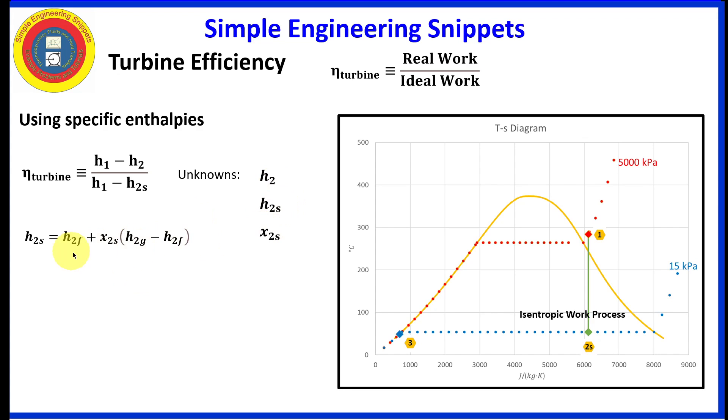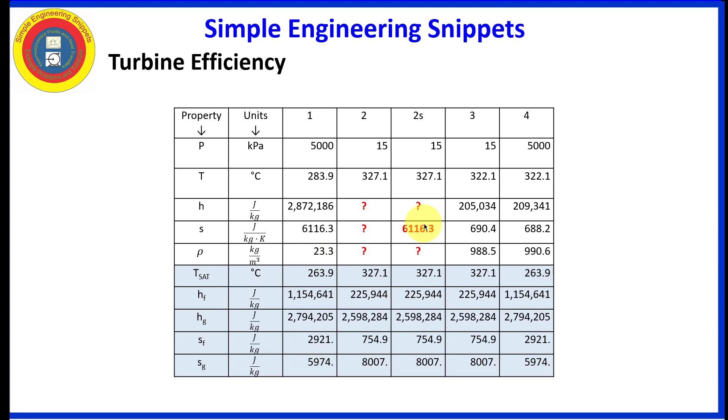Let's start with H2S. If we knew the quality at point two, we would be good to go. But we don't know that. But we do know several things about point two, and that is on the 15 kilopascal isobar. And again, we know that the entropy at 2S is the same as the entropy at point one. So going back to our property table, we know the entropy at one. And so that is the same entropy for point 2S.